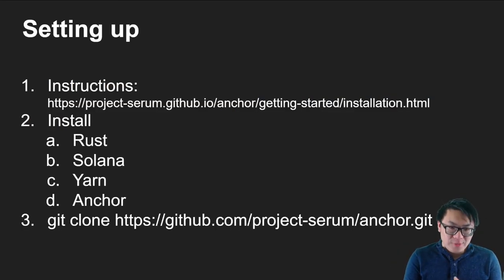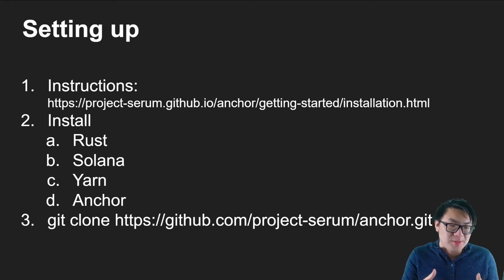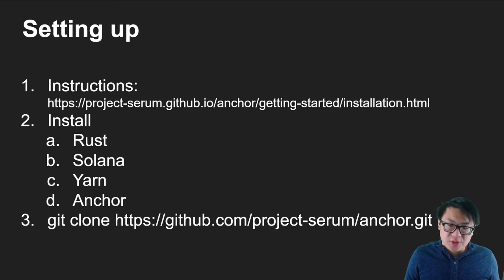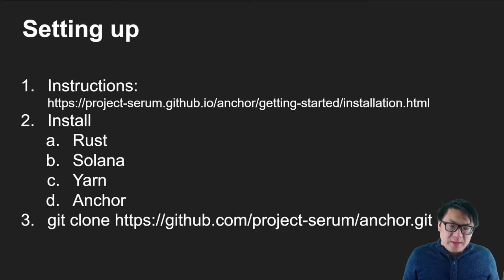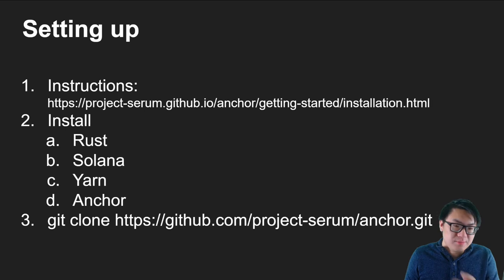Setting up is pretty straightforward. We're essentially just going to go over the Anchor minimal example with some of our own plot twists to match our previous videos. I included the link to the setup instructions and I'll also add it in the description below. The four things we need to install are Rust, Solana, Yarn, and Anchor. If you've been following my previous videos, the only big change is you need to install Anchor with NPM. Yarn will be relevant in actually building the project. We'll be using the Anchor example project provided by Project Serum.